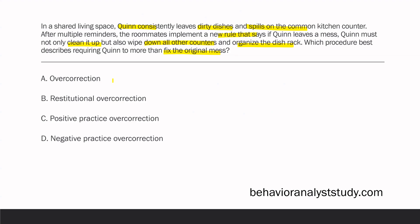This is a good example of why we always read all answer choices. If you just picked A — overcorrection — you'd be correct, but there's a better answer. B, restitutional overcorrection, is when the person must fix whatever the behavior caused and also restore the environment better than before. Not only must Quinn clean up the mess, but they also have to wipe down the counters and organize the dish rack. Positive practice overcorrection would make Quinn engage in the correct behavior repeatedly; negative practice would have Quinn engage in the wrong behavior repeatedly. Since Quinn is correcting the environment, the answer is B — restitutional overcorrection.